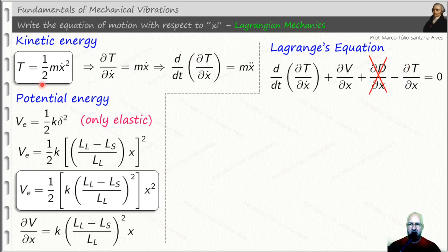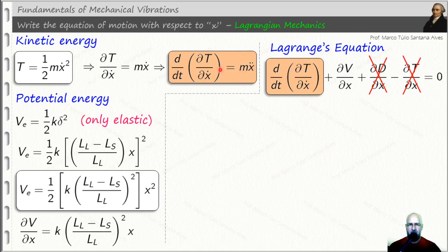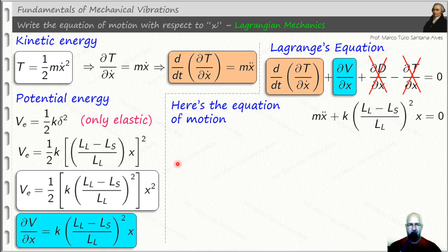For this term here, if you analyze the expression for the kinetic energy, we have no x here, we have x dot, but no x here. For this reason, this term here is zero. We can eliminate it, so we need just two parts here. This first term is calculated here, and this term is calculated here.